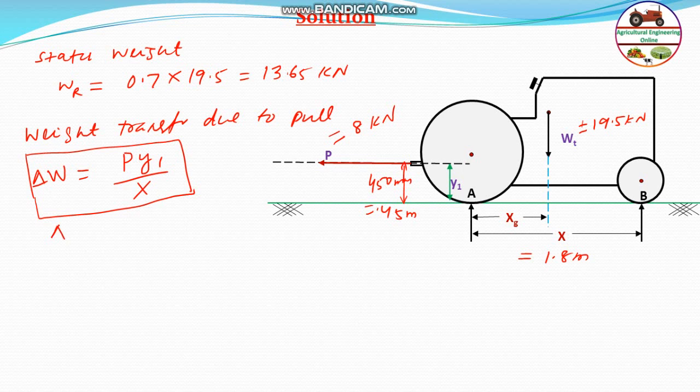The change in weight or weight transfer will be equal to p, which is 8, into y1, which is 0.45, divided by x, which is 1.8. Straightforward, the weight transfer will be equal to 2 kilo Newton.